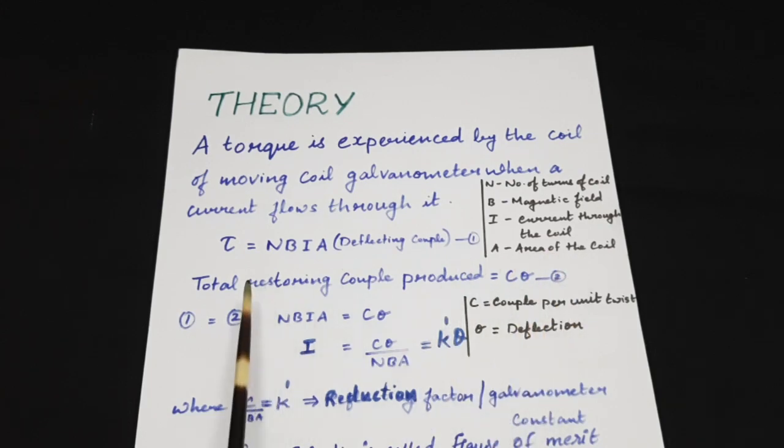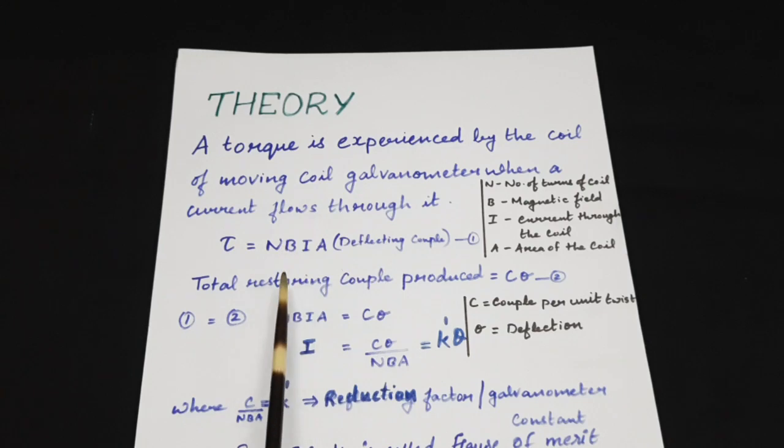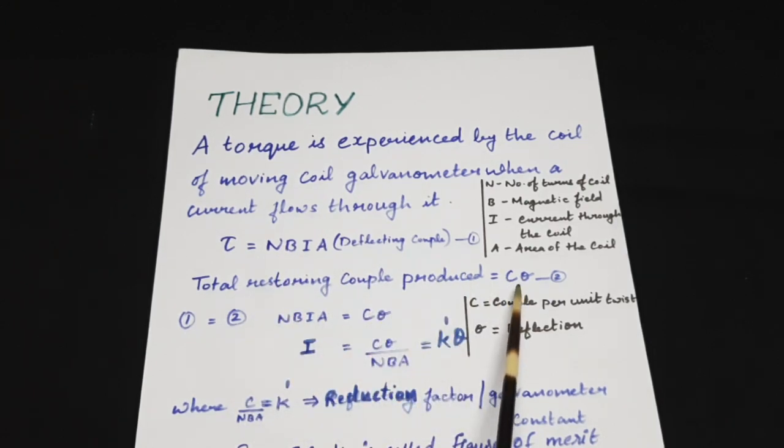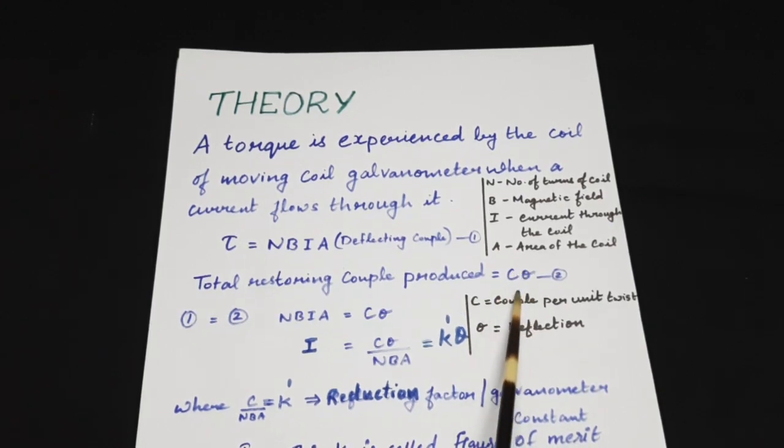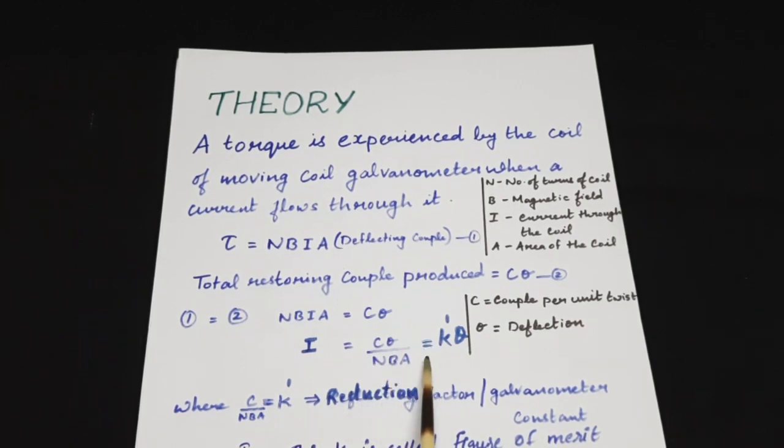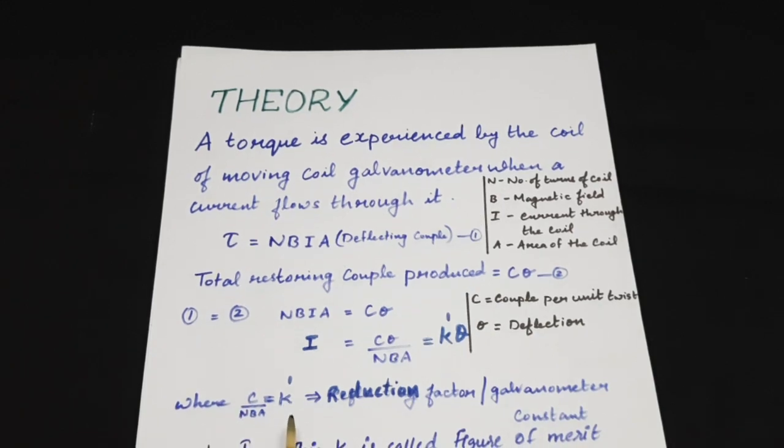Under equilibrium, we can write this deflecting torque will be equal to the restoring couple and it can be represented as C into theta, where C is a couple per unit twist and theta is the deflection produced. On equating these two under equilibrium, I can write I is equal to C theta by NBA or that is equal to K dash theta, where I have defined K dash as C by NBA. This is a constant and it is known as reduction factor of galvanometer constant.